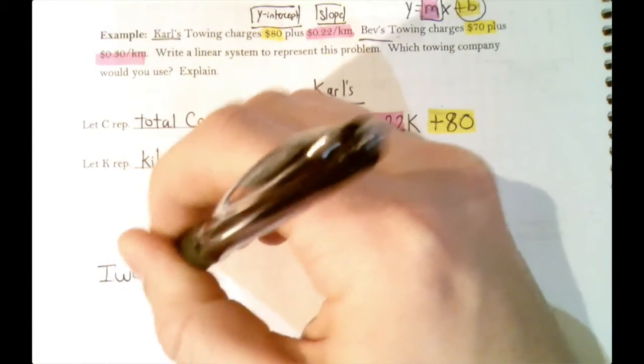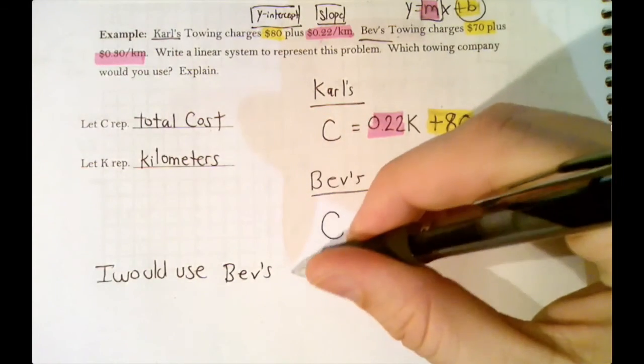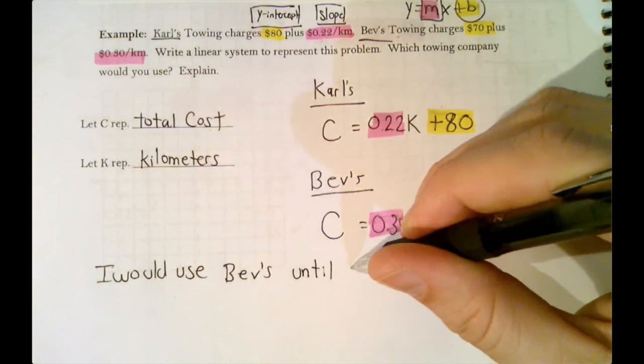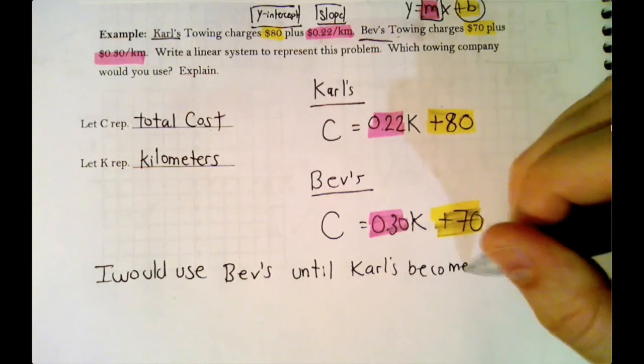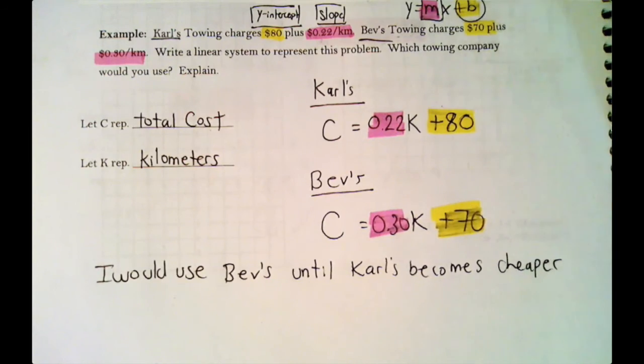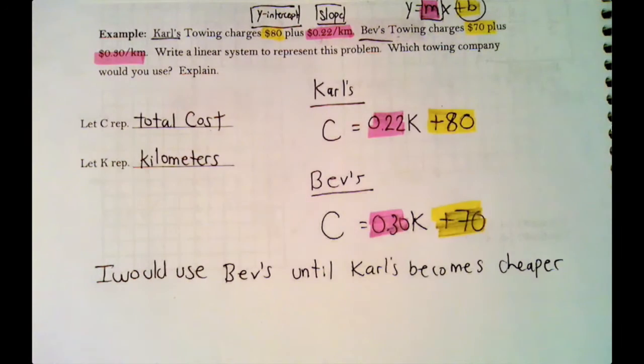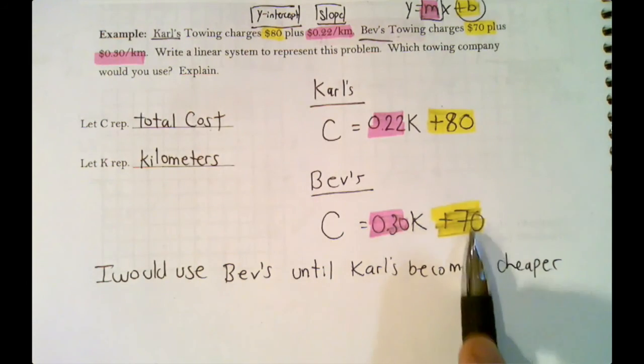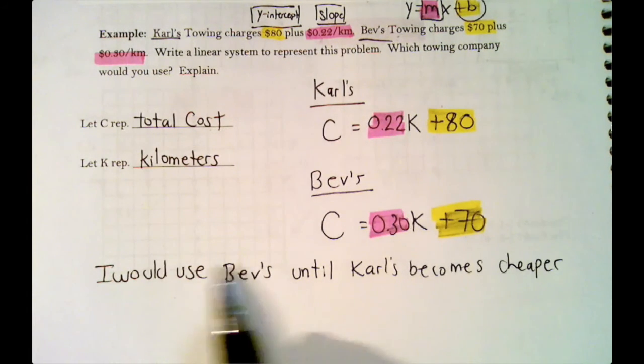So which towing company would you use? Well, I would use Bev's until Carl's becomes cheaper. And the neat thing is, we can figure out exactly when Carl's becomes cheaper, and that's finding the point of intersection. So that's actually where we're going in this unit. We're going to move past writing an equation, then we're actually going to graph these and find out exactly when Carl's becomes less expensive. Bev's is at the beginning, 70 versus 80, but since she charges more per kilometer, eventually she's going to cost more than Carl's. We just don't know when. So this will have to be to be continued.